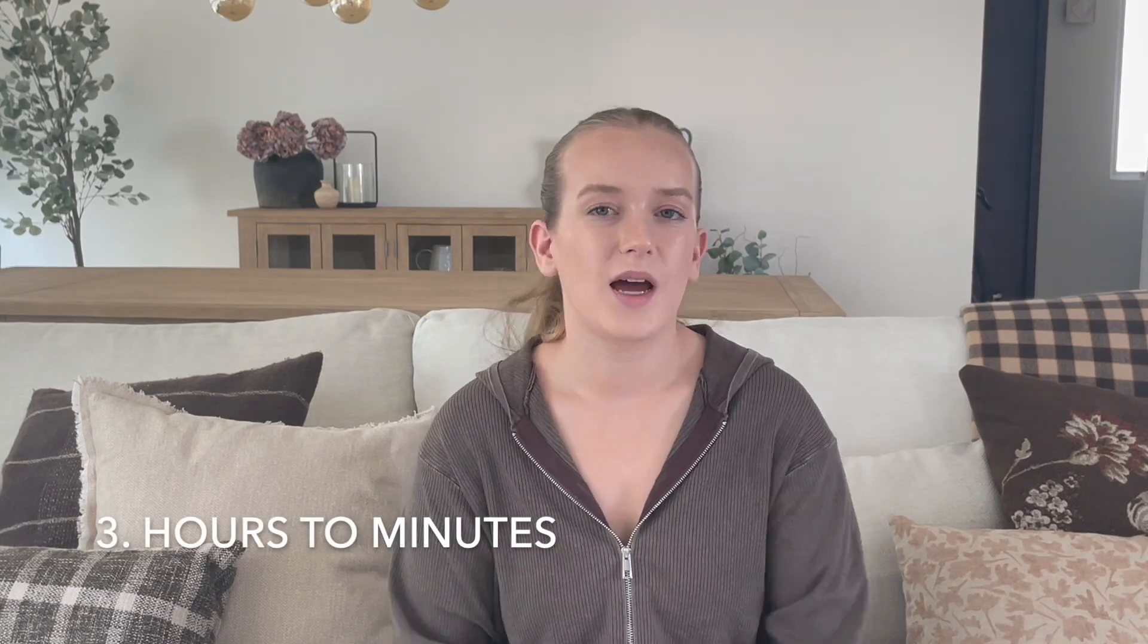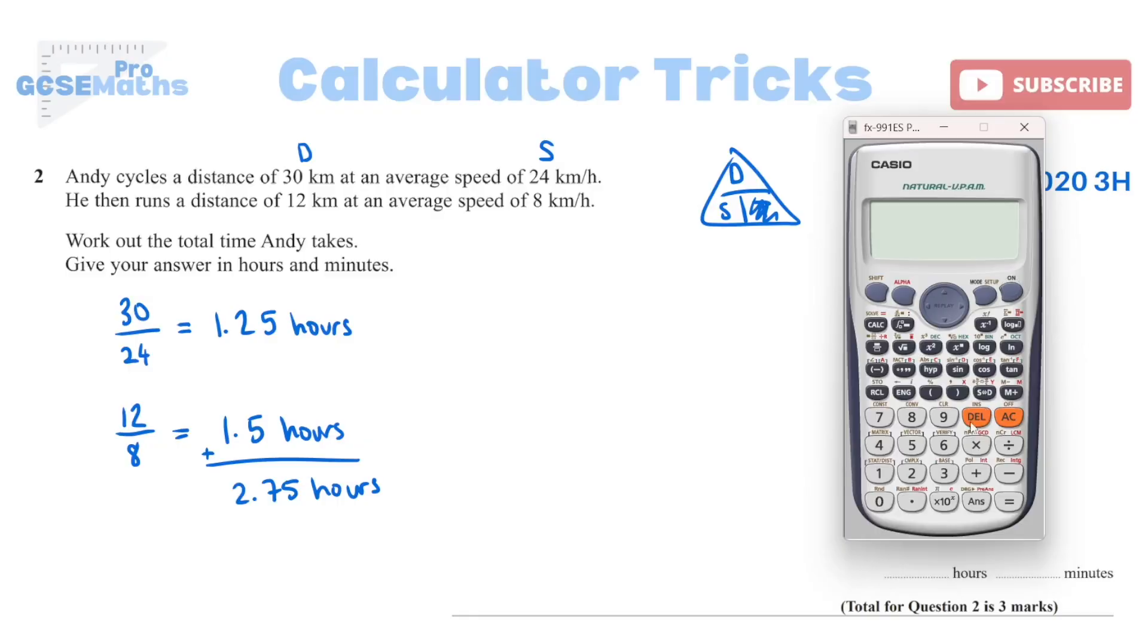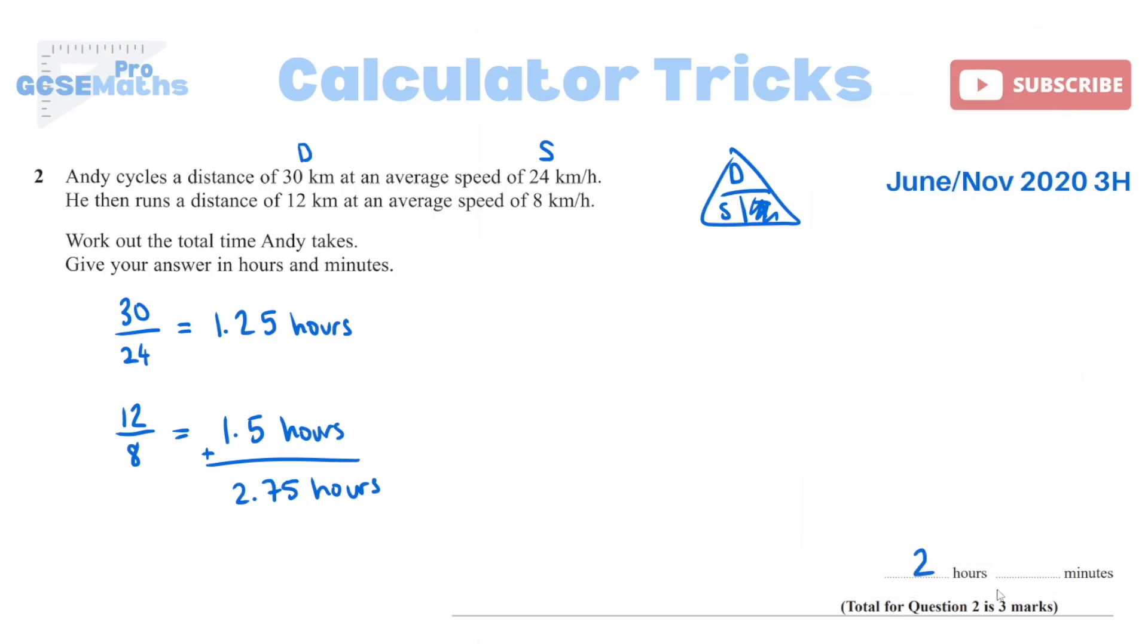So if you ever get a speed distance time question and at the end they're asking you to give the time, you might have given it to you originally in terms of just hours and then they've asked you to put your answer in hours and minutes. So you would type in the number of hours as a decimal, obviously press equals. Once you've got the answer, which will be the same thing, if you can find the button that kind of looks like almost like a full stop and then three commas, just press that on top of your answer and it will convert it into hours and minutes for you.